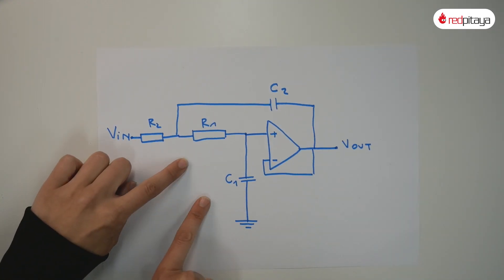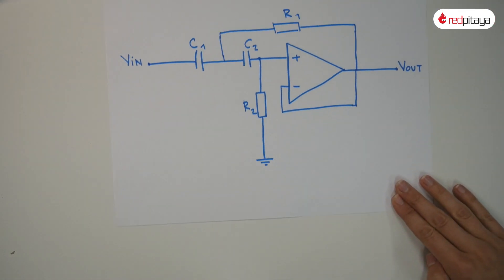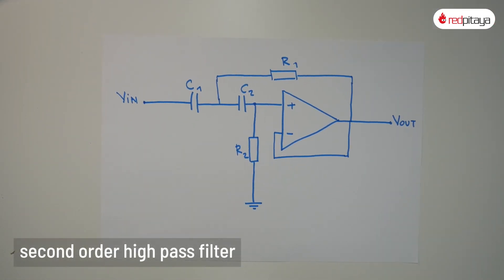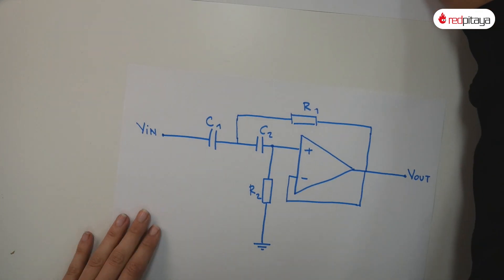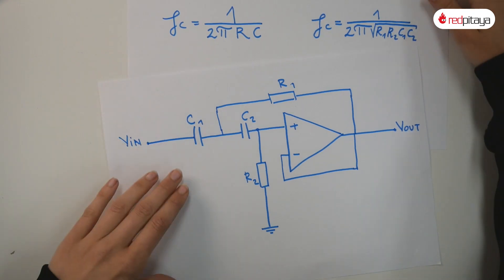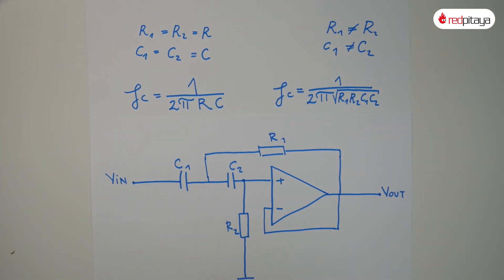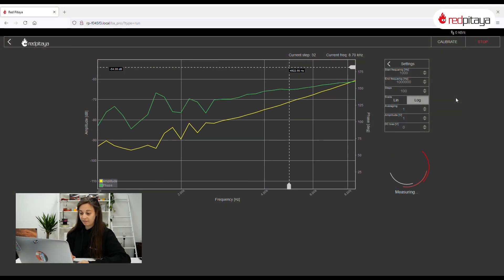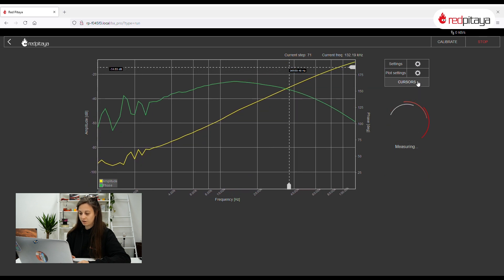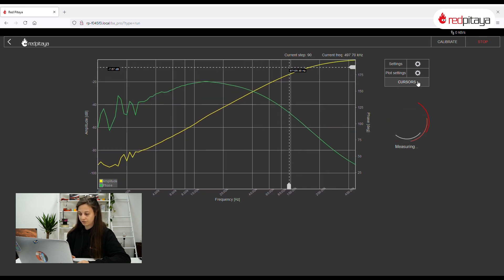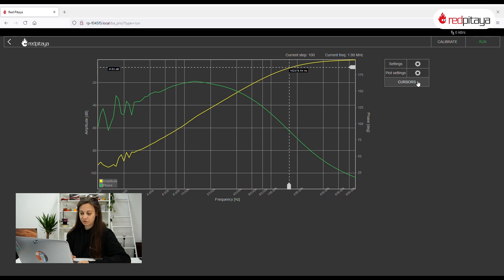Moving on. Swapping resistors and capacitors will, unsurprisingly, give us a second-order high-pass filter. Schematic will look like this. Corner frequency remains the same as before. Here's a Bode plot — nothing too exciting. 6 dB drop at roughly 160 kHz, just like before, but this time in a high-pass configuration.